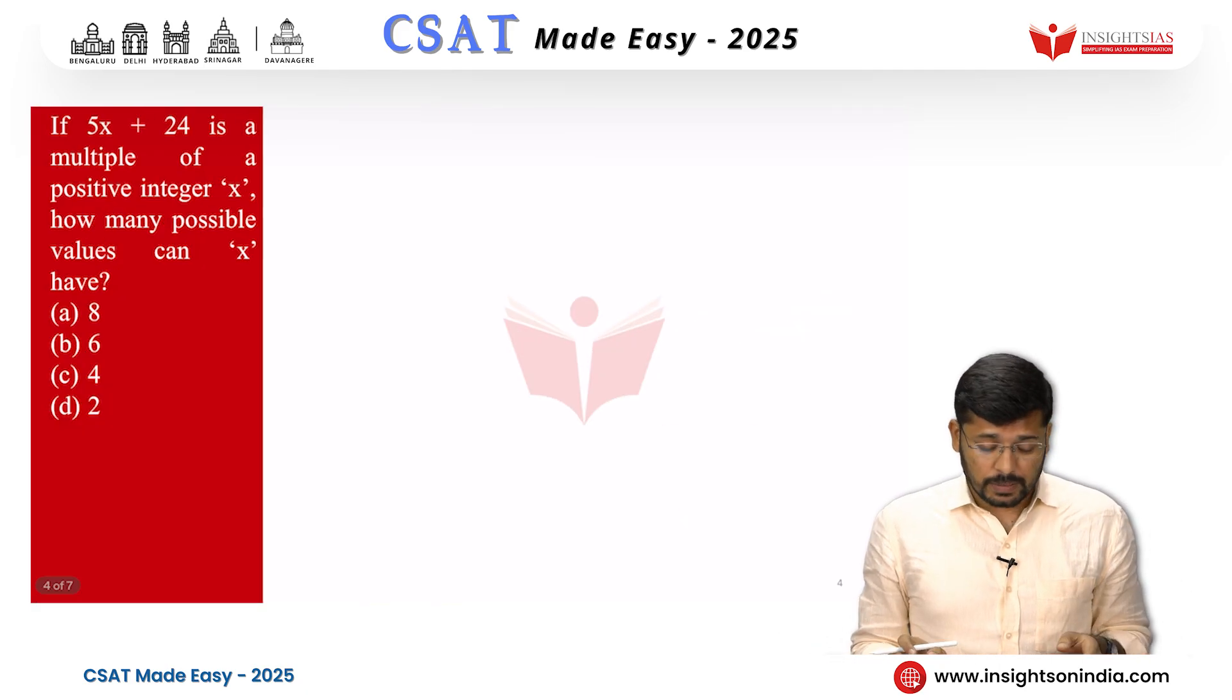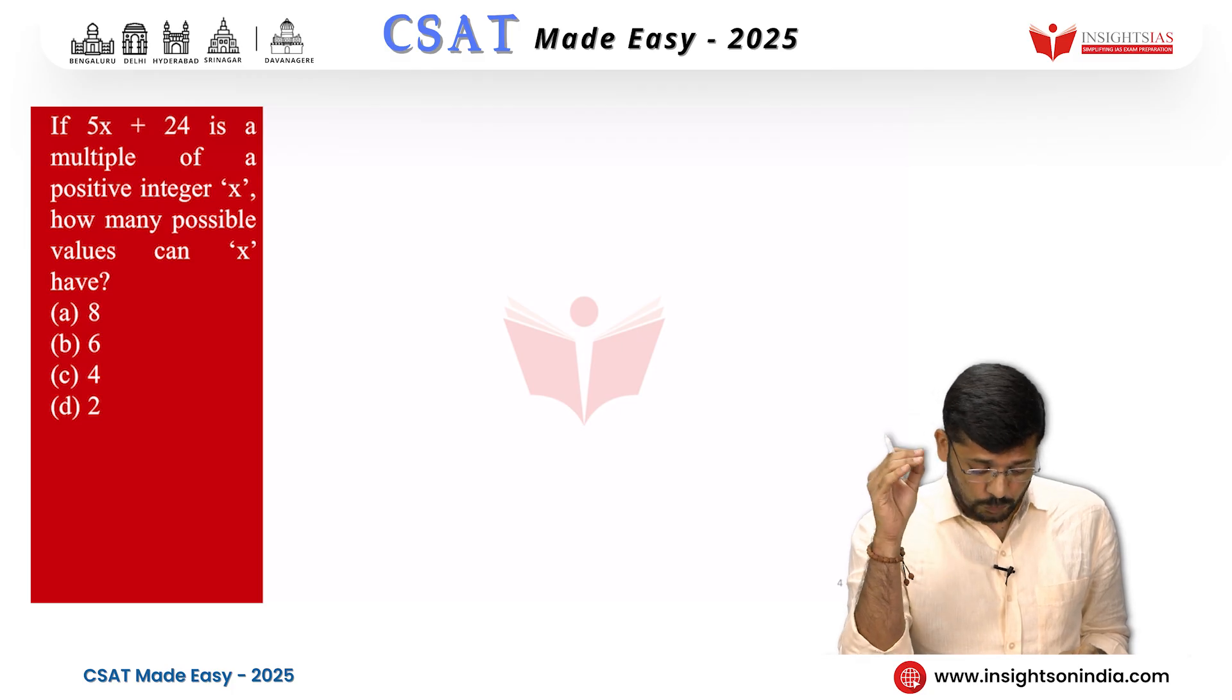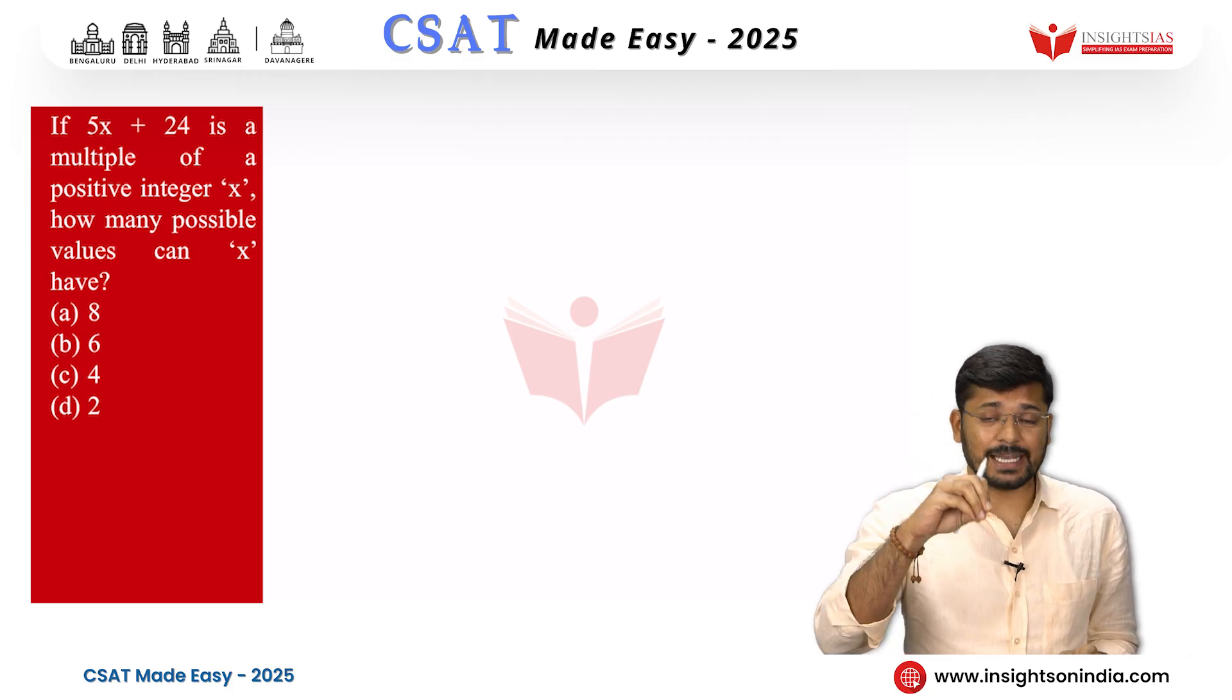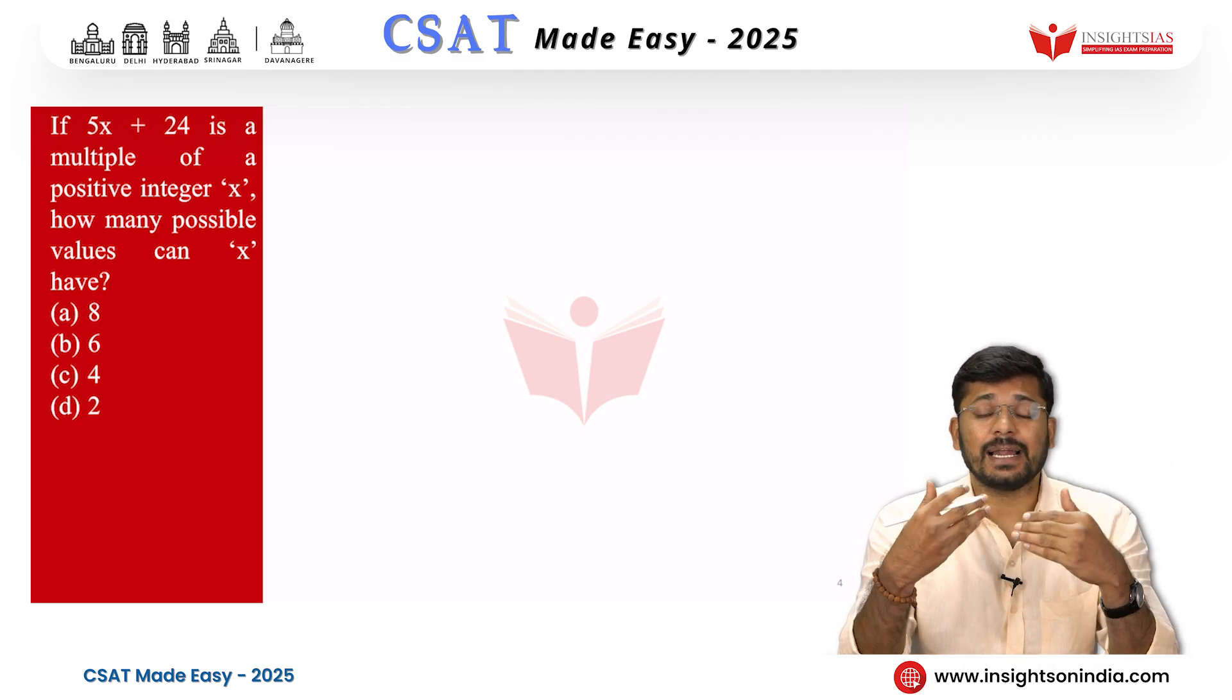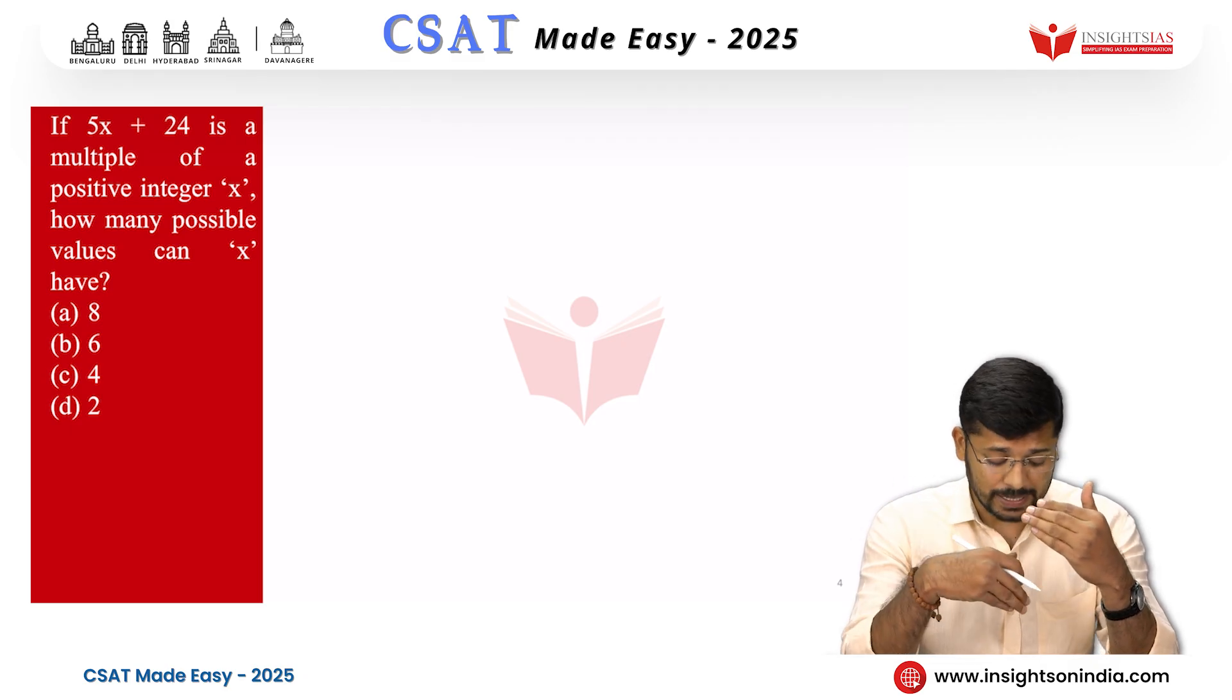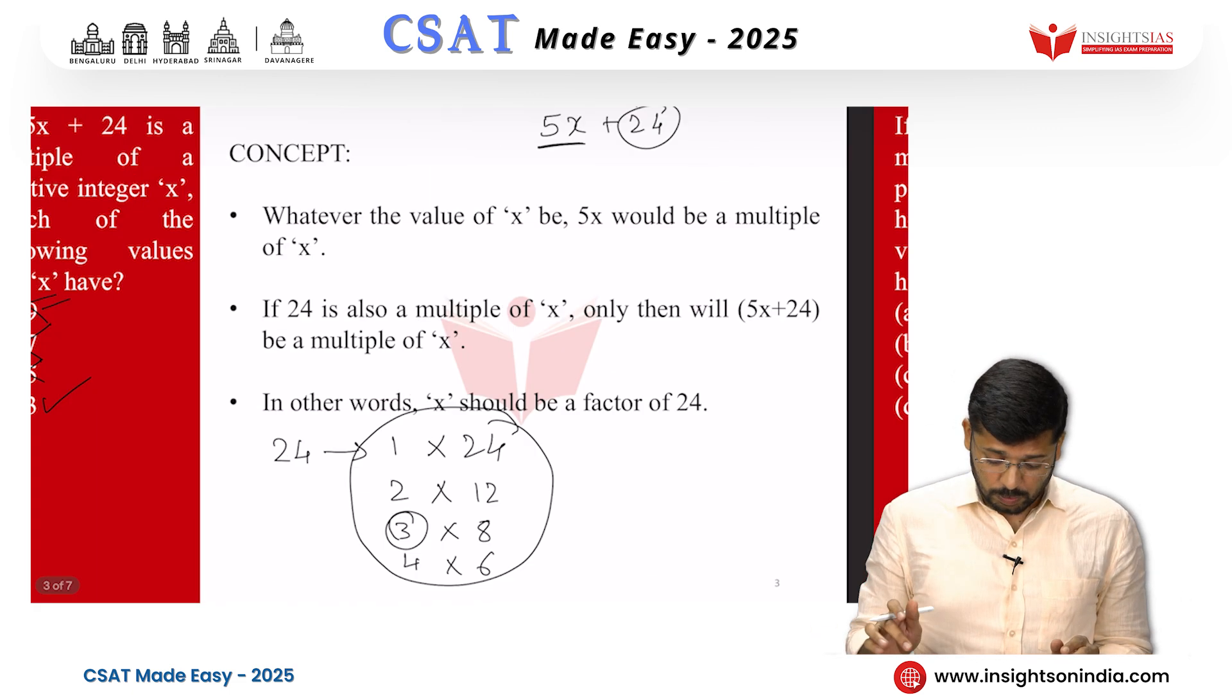Let us go to the next question now. It is a continuation of the same question. If 5x plus 24 is a multiple of a positive integer x, how many possible values can x have? In the previous question they asked us what, they give us 4 options and asked us to pick one of them to be a possible value of x. Here they are asking us how many values can x take?